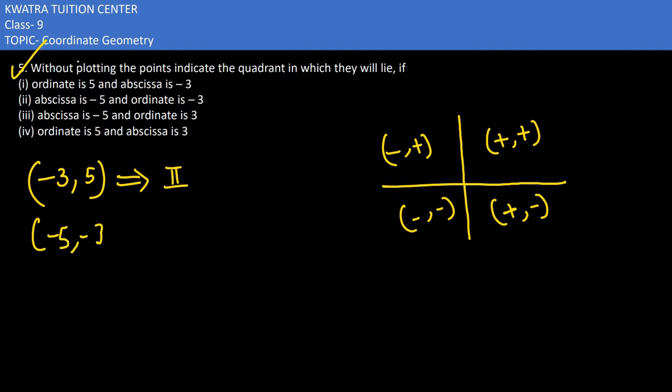Second, we have X coordinate is minus 5 and Y coordinate is minus 3. So both negative, which quadrant? Third quadrant.